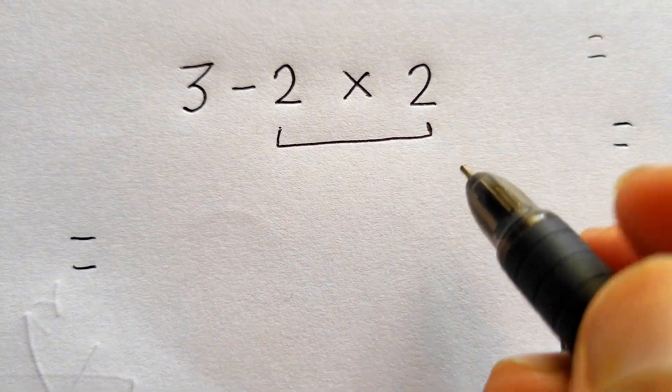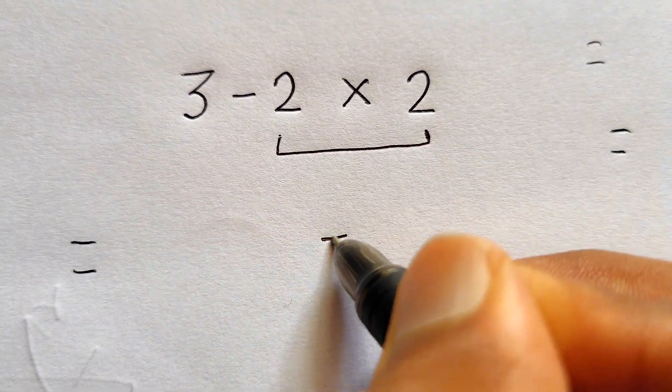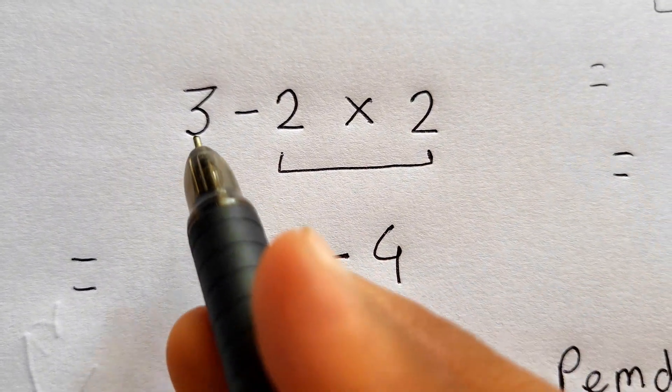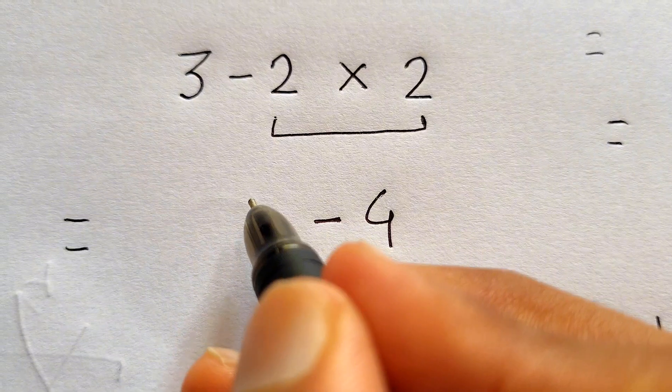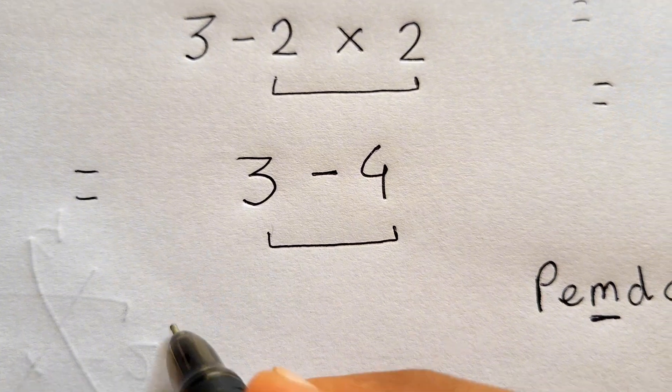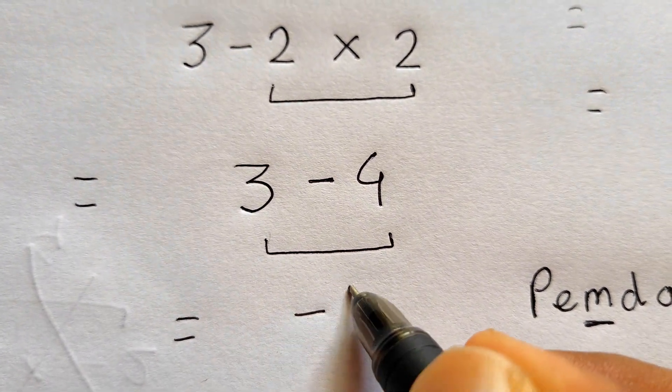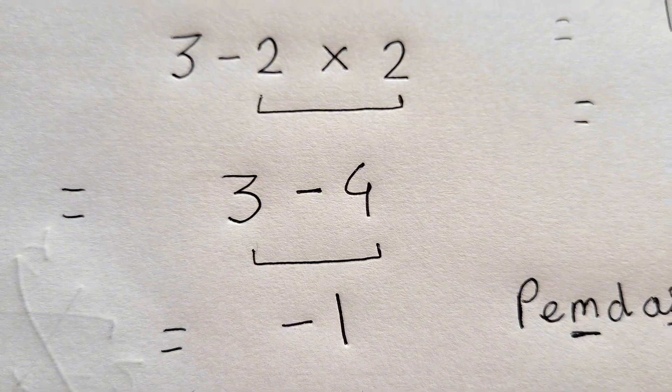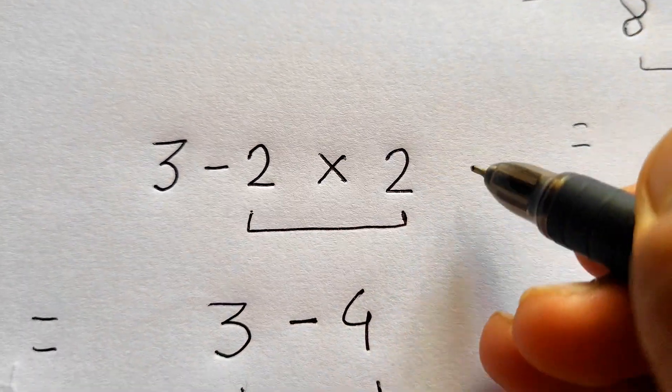So we'll write down minus 4, and now we are left with 3. So we'll write this 3 as it is. So it becomes 3 minus 4, and the answer to 3 minus 4 is minus 1. So the final correct answer to 3 minus 2 times 2 is minus 1, not 2.